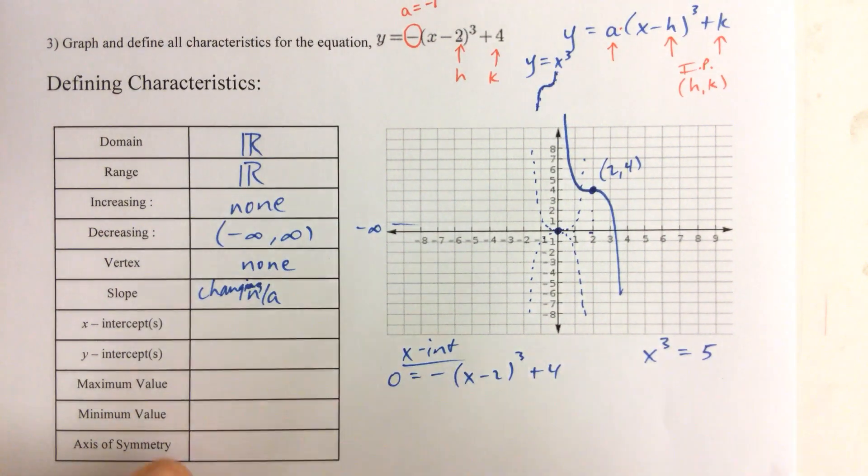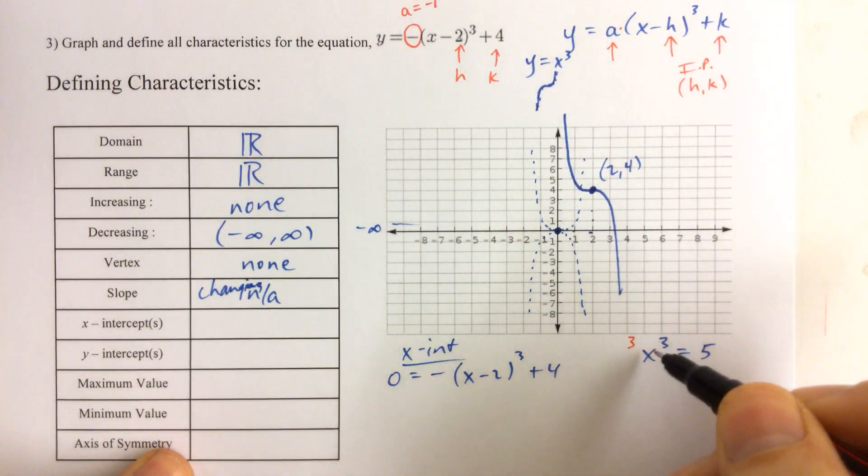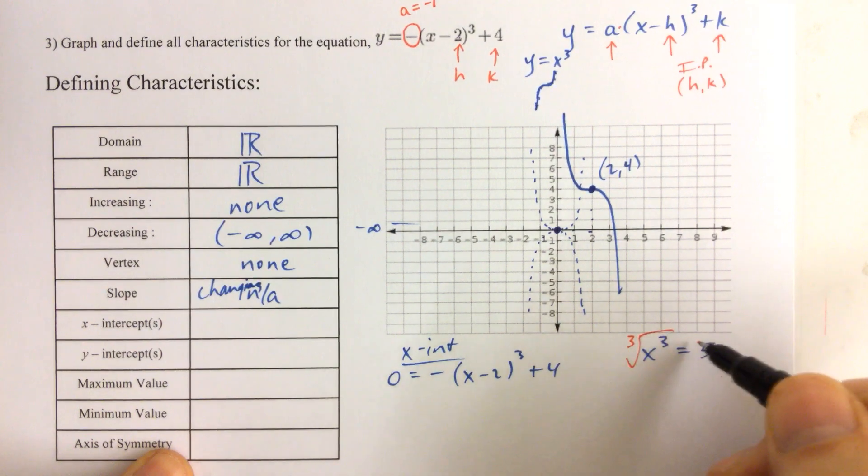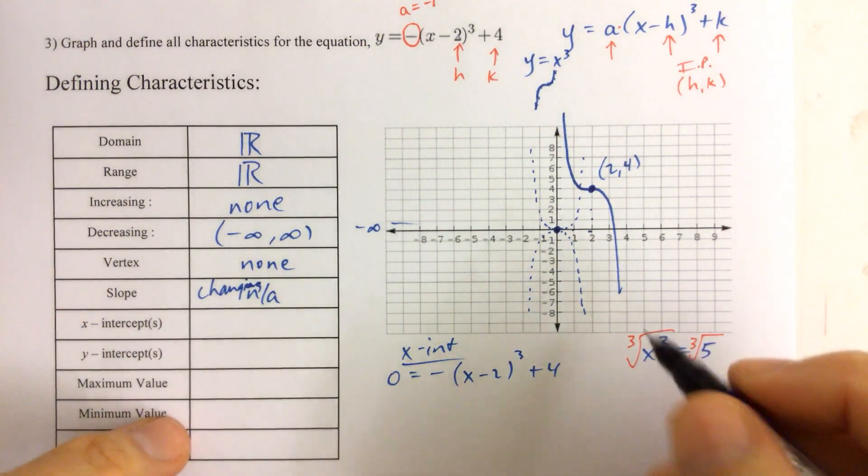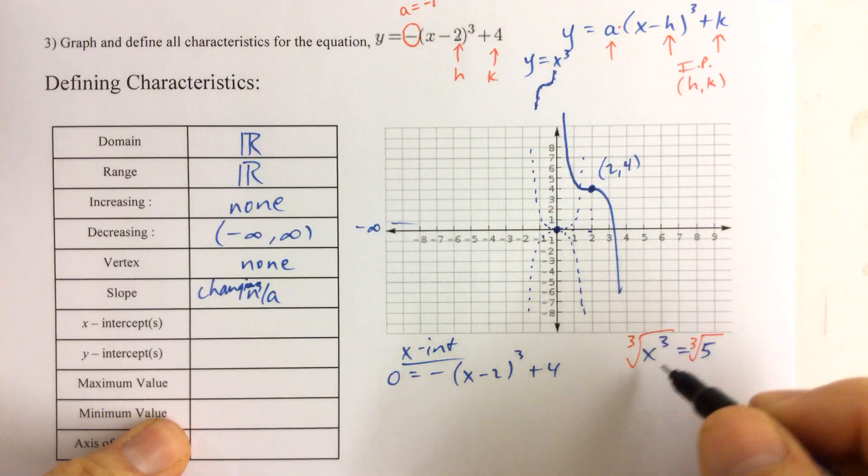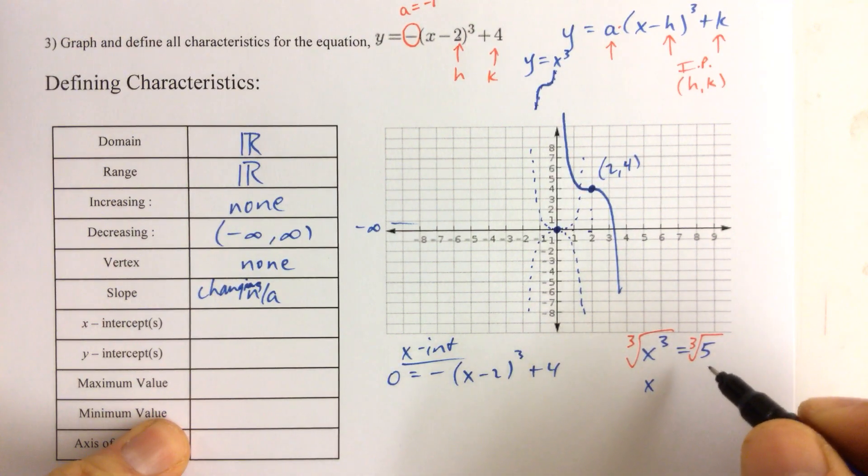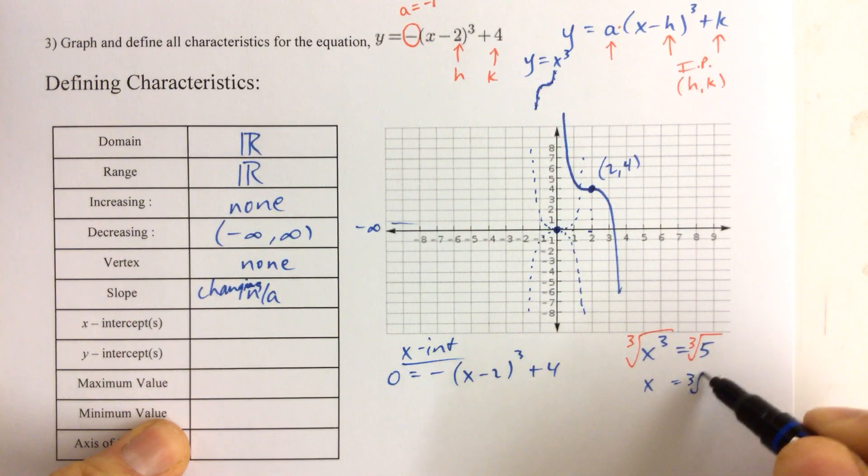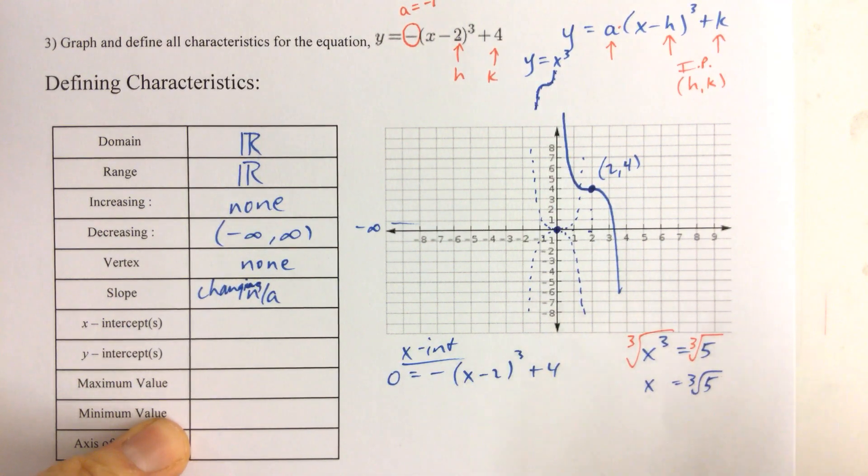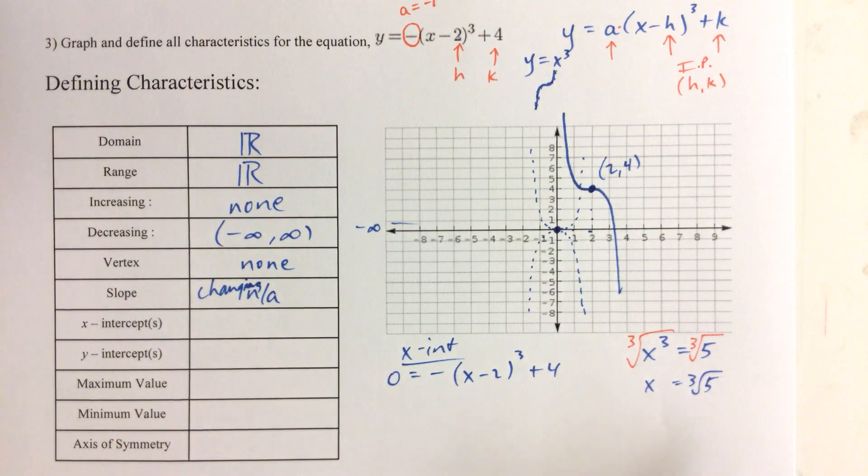If you were to solve the equation x cubed equals, let's say 5, then in order to undo something being cubed, to undo that we take the cube root. The cube root of something cubed, they cancel each other out and we get x. The cube root of 5 cannot be simplified anymore, unless you have a calculator, but we're going to leave it as cube root of 5.